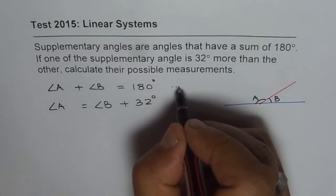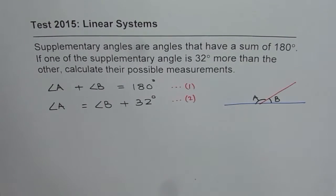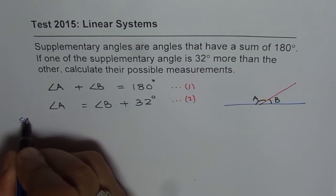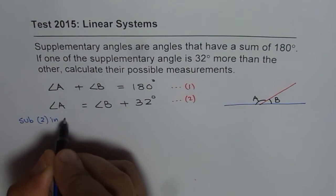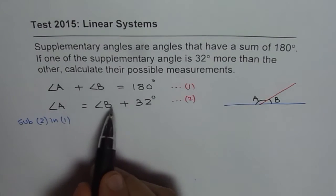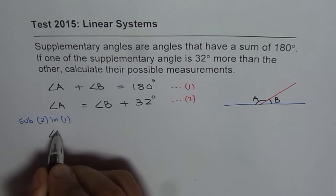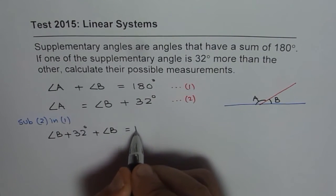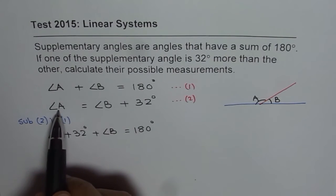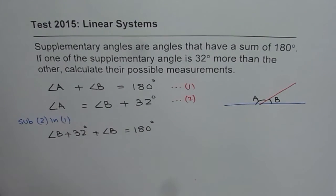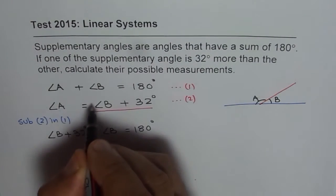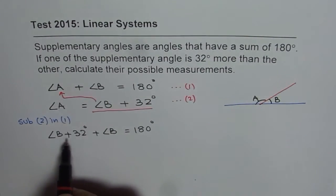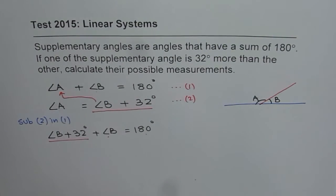So we have two equations here, one and two. Now it is easy to find the values of both the variables A and B. Let us substitute equation 2 in 1. So if I do that, that means A equals to angle B plus 32, what do I get? I get angle B plus 32 degrees plus angle B equals to 180 degrees. So I have substituted this value of A, which is angle B plus 32, here in the first equation.